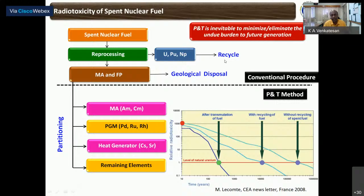The raffinate after the extraction of uranium and plutonium is known as high-level liquid waste, which contains some minor actinides, fission products, corrosion products, etc. It has been suggested to immobilize this waste in a suitable matrix like glass and dispose it in deep geological repositories. This was previously adopted, but as of now it has been under scrutiny because of the radio-toxicity associated with these minor actinides and fission products.